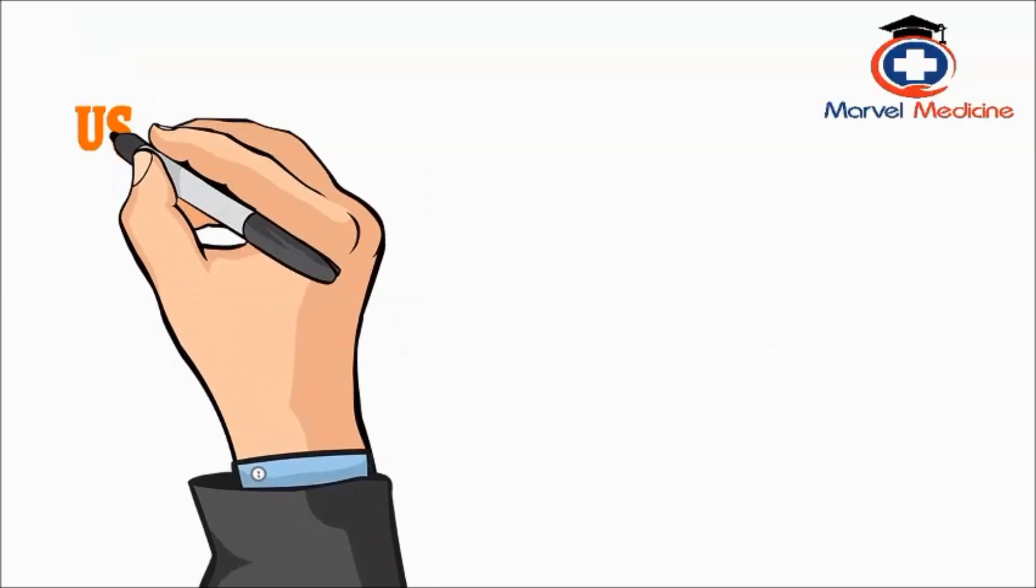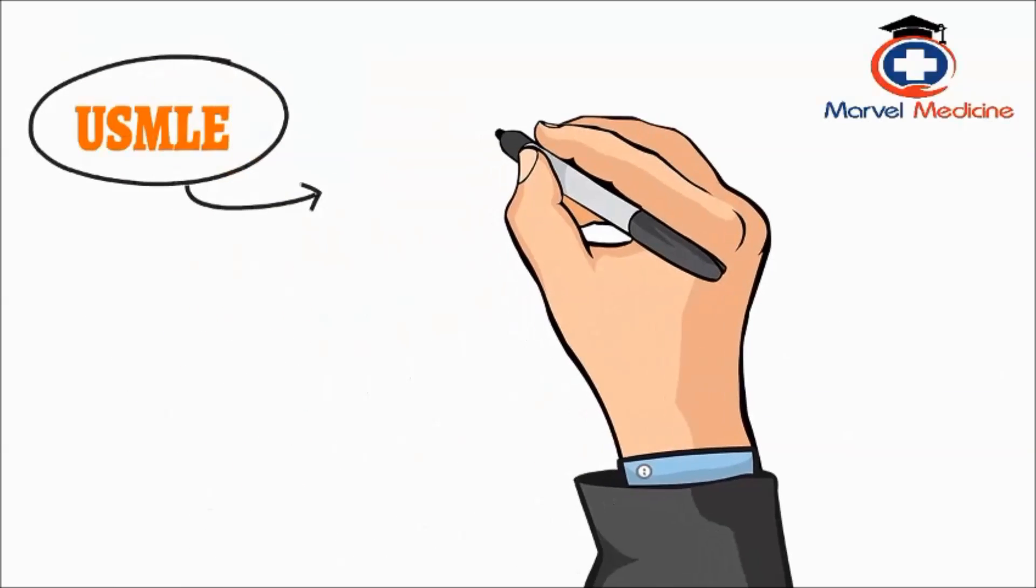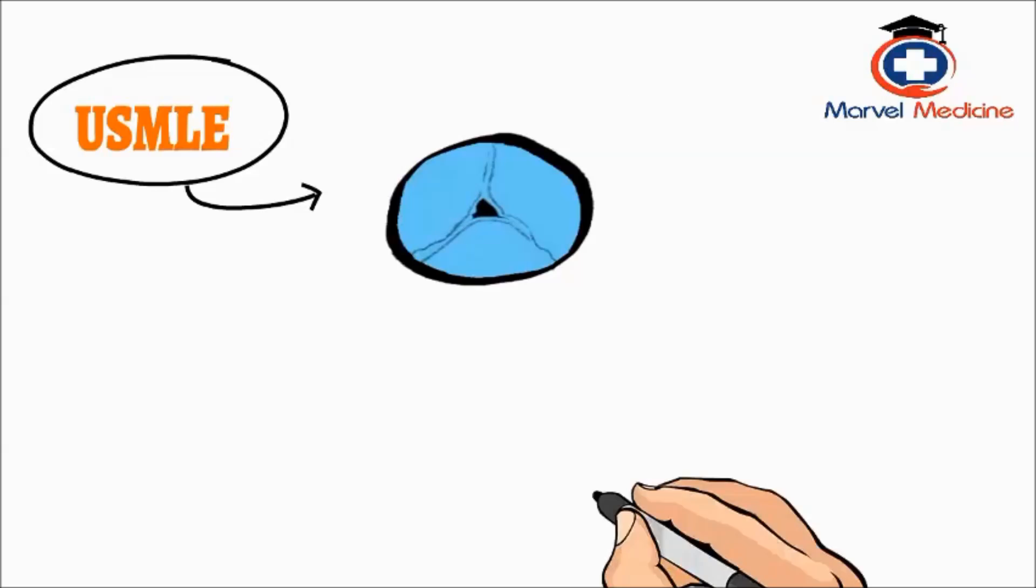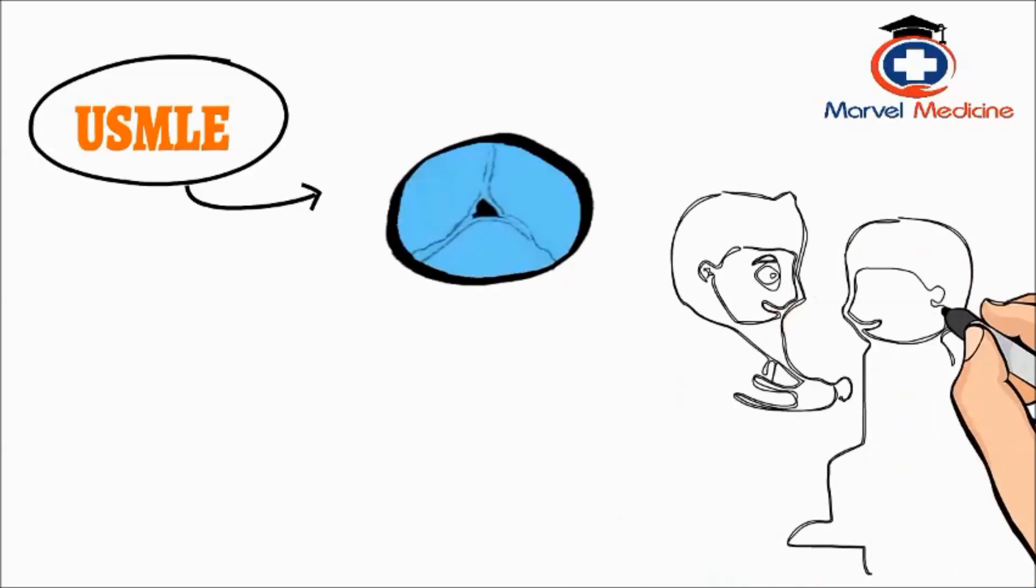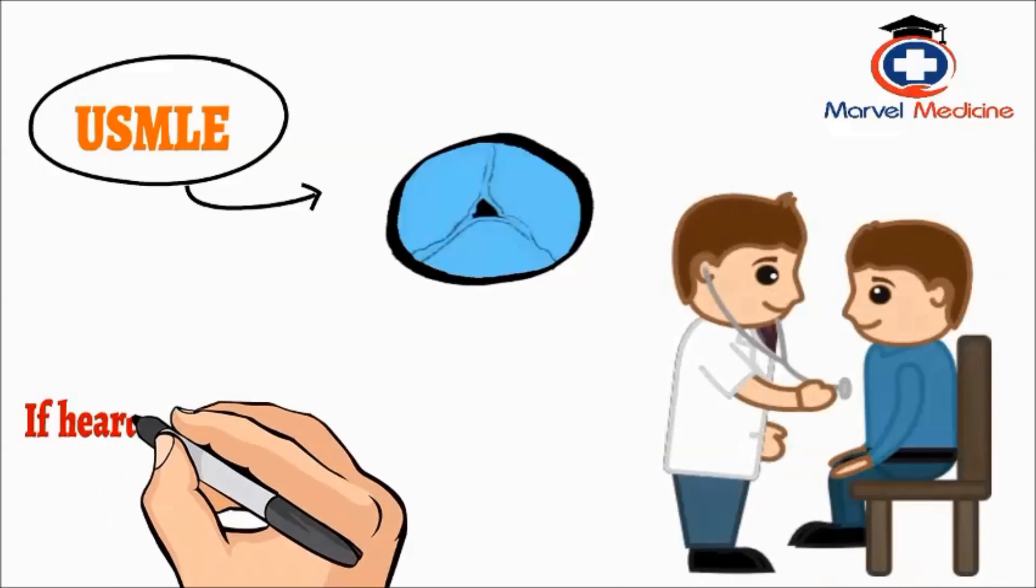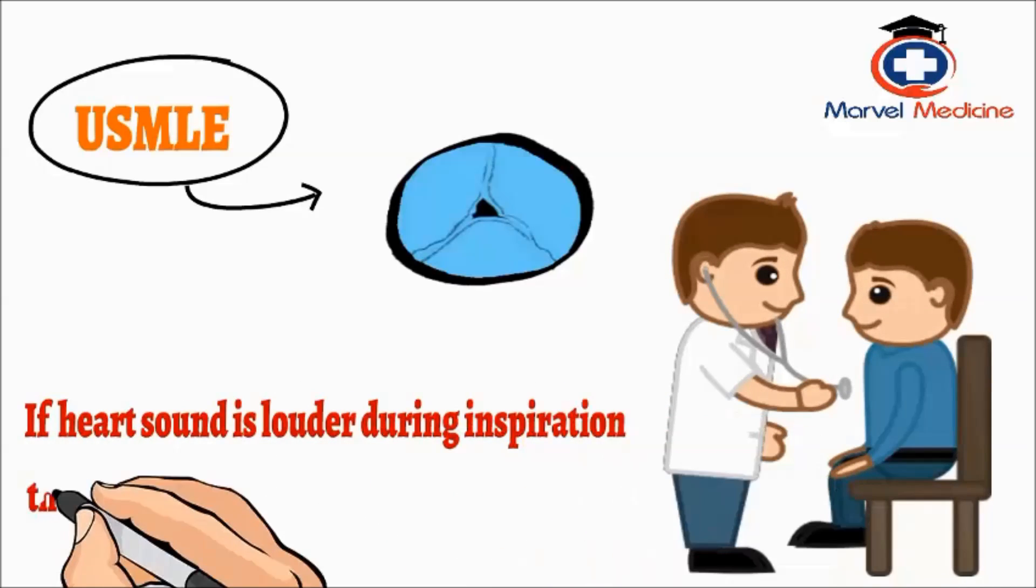The way this comes up on the USMLE isn't usually media. Most of the time they won't have you listen to tricuspid stenosis and expect you to recognize it. They may do this, however. They might have a vignette, then have you listen to the heart sound. If it gets noticeably louder during inspiration, then that's the tip off. It's right sided.